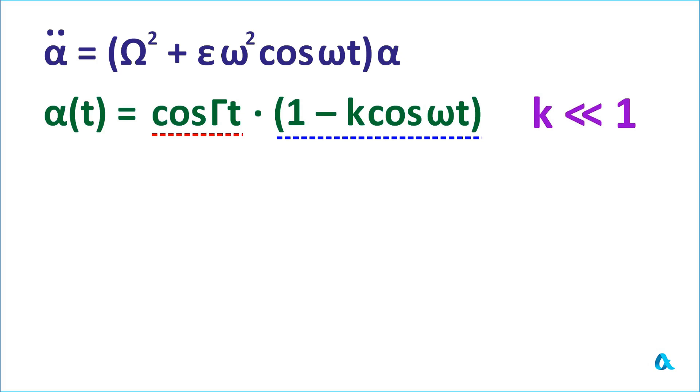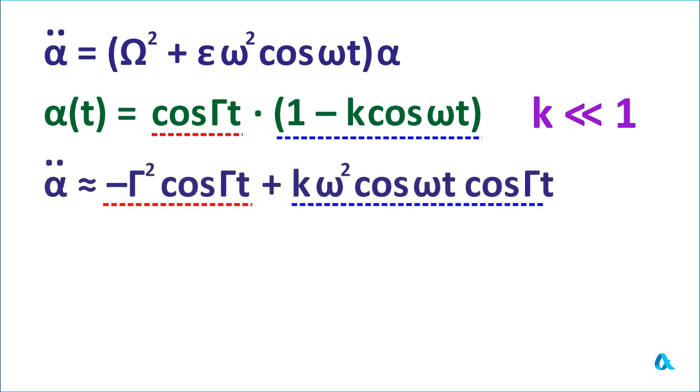Well, now we need to differentiate α with respect to time twice. And I will not write out all the terms in this second derivative completely, but I will write out only the main ones: one slow and one fast. The slow one, the main one, is in parentheses. We need to leave only the unit, differentiate cosine γt twice. We get minus γ² cosine γt. And the fast term, that means this k cosine ωt, we only differentiate it with respect to t. And now we get plus k ω² cosine ωt and cosine γt. This is on one side.